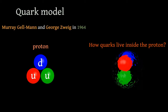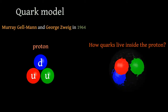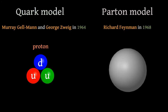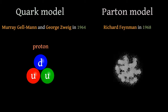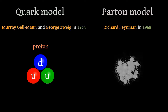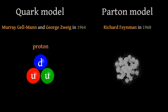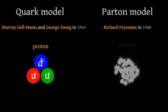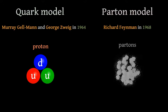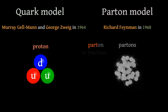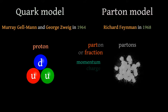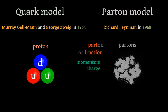Such description became available in the framework of the so-called Parton model, proposed by Richard Feynman in 1968. According to this model, the proton is built from some constituents, which were called by Feynman as Partons. Each Parton inside the proton carries some part, or fraction, of its momentum, its electric charge,